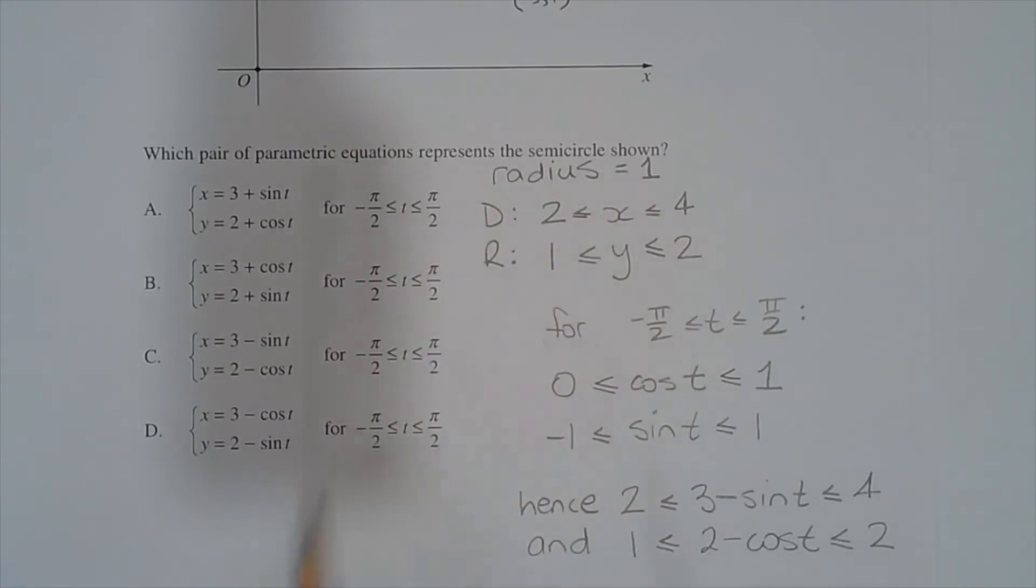Combining the domain and range here with this result, we get 3 minus sine t is greater than or equal to 2 and less than or equal to 4, and 2 minus cos t is greater than or equal to 1 and less than or equal to 2. Hence the answer is option C.